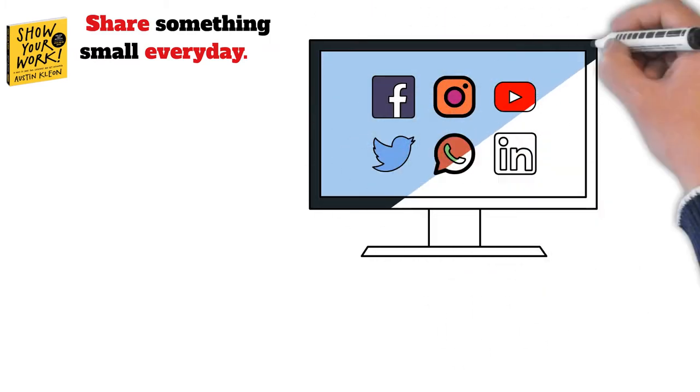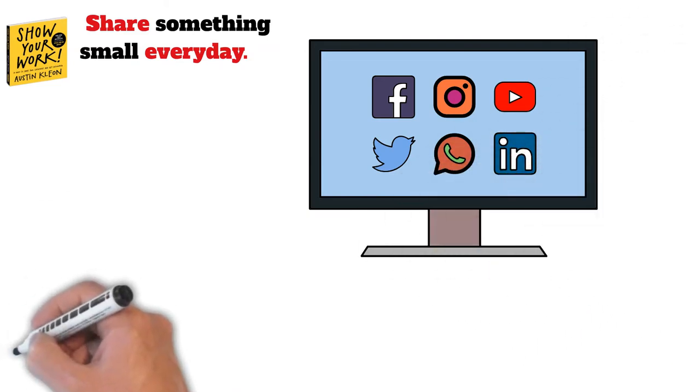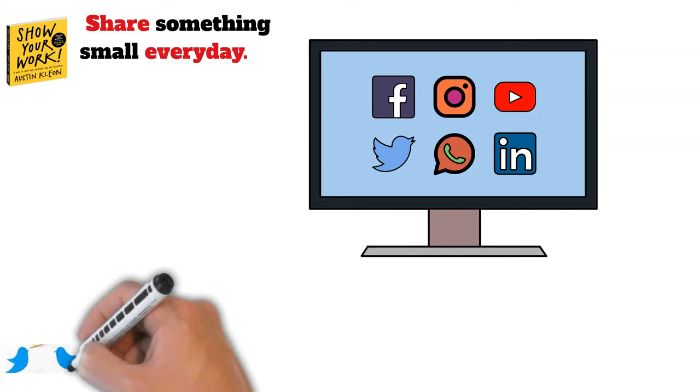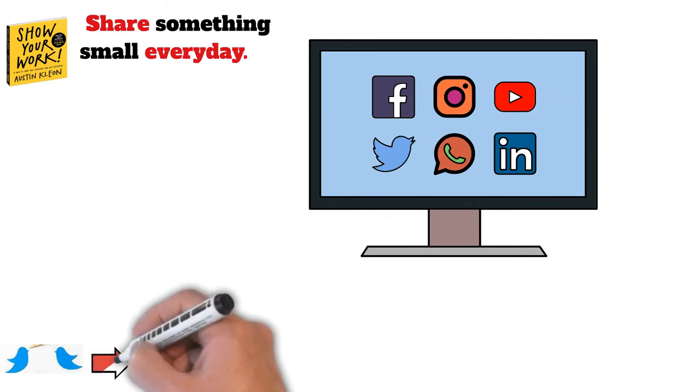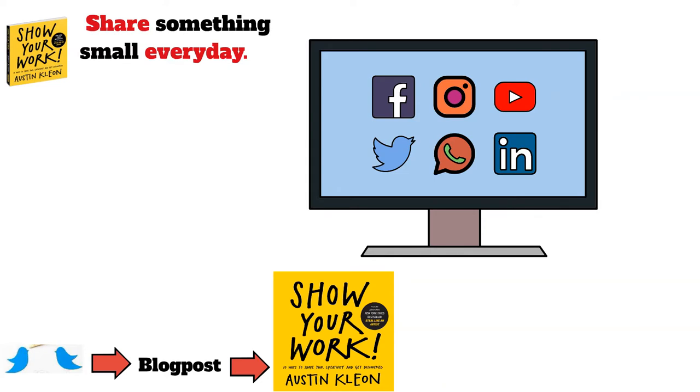Eventually, you end up having lots of posts and from them you can get ideas that build into something. For example, the book showing your work started as a tweet, which became blog posts and eventually turned into a book. Trust in the power of compound interest if you share something every day. At the end of the year, you'll have 365 different forms of ideas. You can create something out of them.